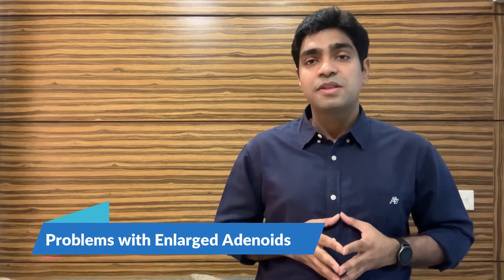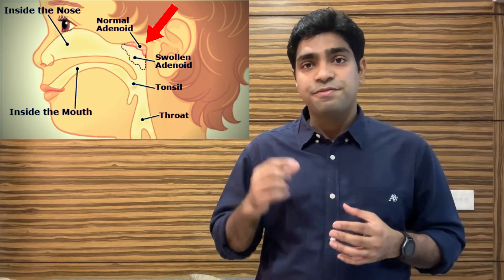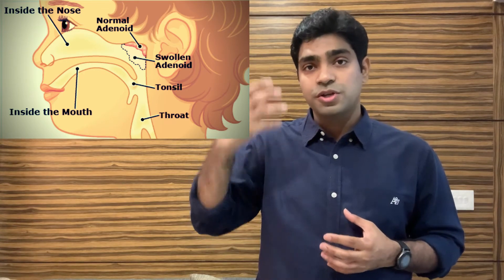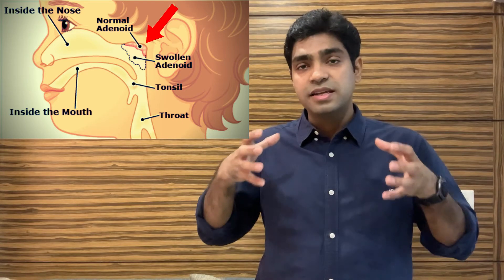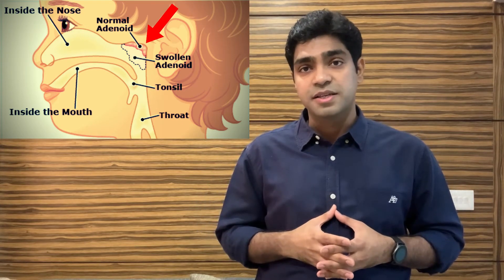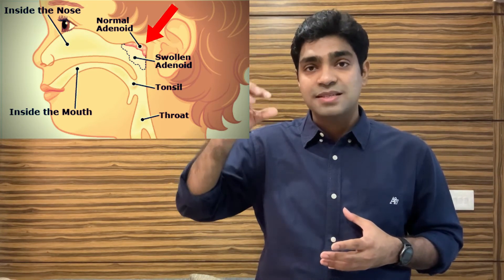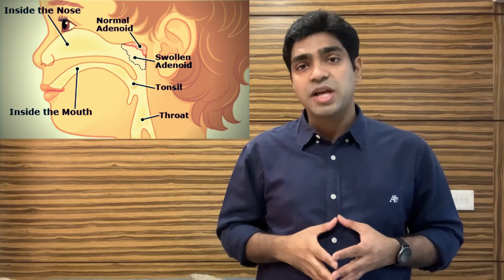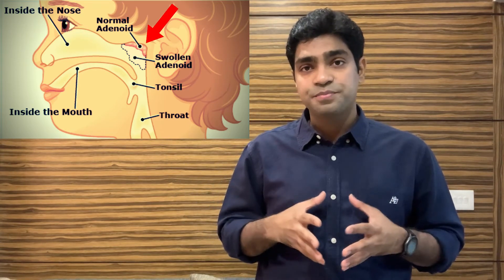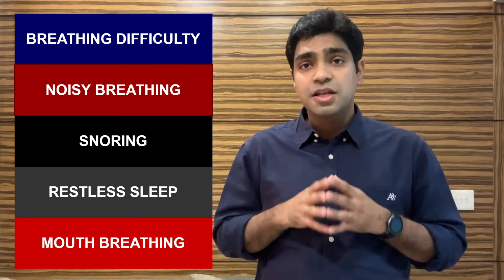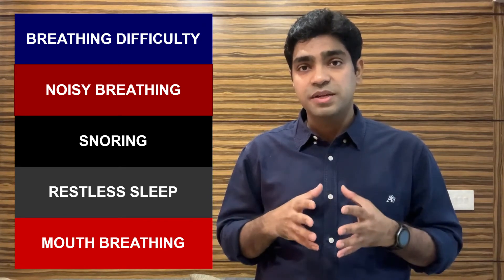So what exactly is the problem with having enlarged adenoids? Since adenoids are found behind the nasal cavity and the upper part of the throat, if they increase in size, a child will have breathing difficulties because the passage from the nose to the lungs is reduced. Because of these breathing difficulties, there will be restless sleep and noisy breathing sounds.